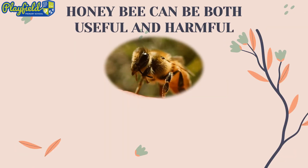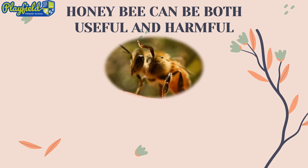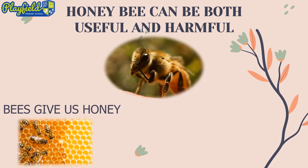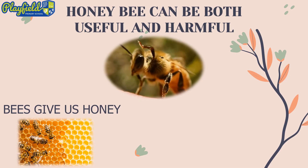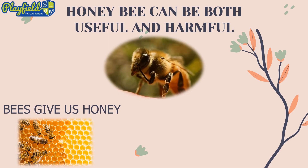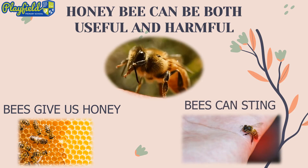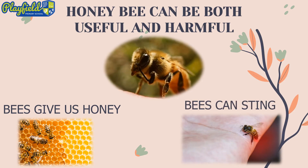Some animals can be both useful and harmful. For example, this honeybee. The useful side of honeybee is it can give us honey. But on the other hand, it can sting and make us swell.